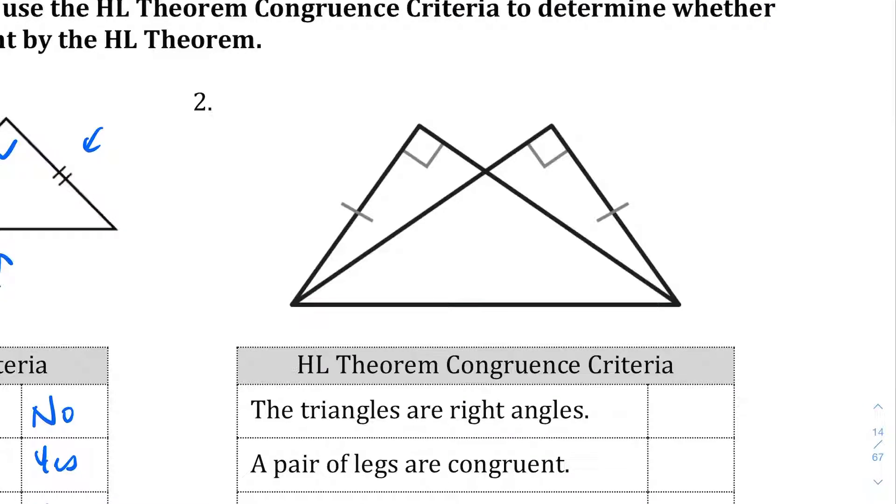Let's take a look. So in this case, we do have the right angle markers here. So we can say these are right triangles, yes. Yes, a pair of legs are congruent, so we're going to say yes. The hypotenuses are congruent. Well, it's two separate triangles right on top of each other, and they do happen to share this hypotenuse right here. So we're going to say yes to that as well.